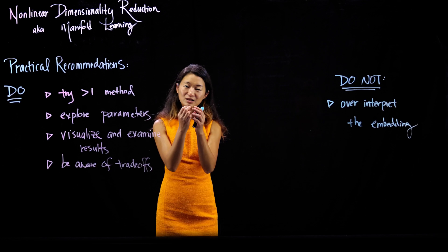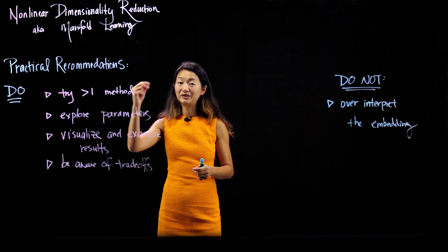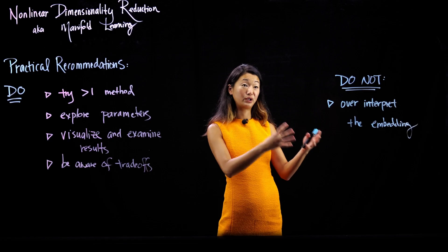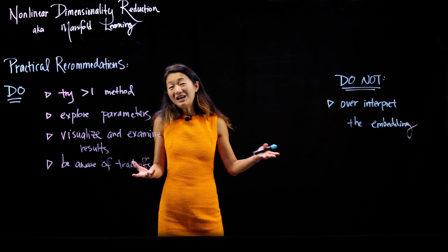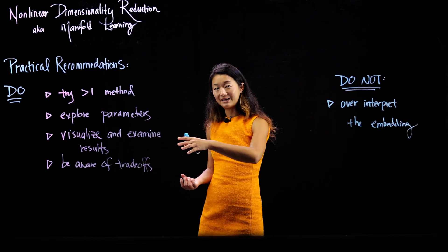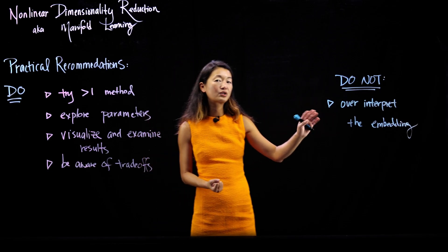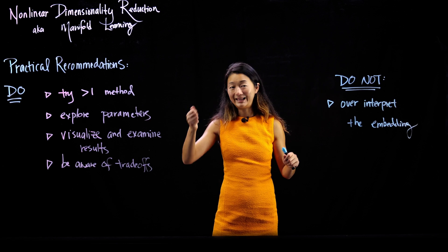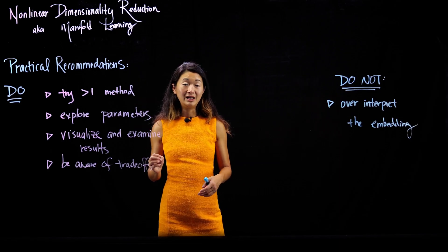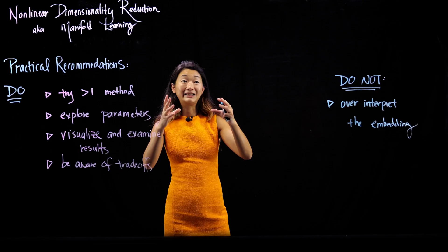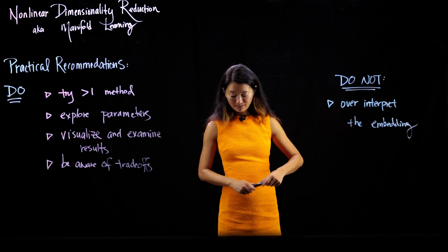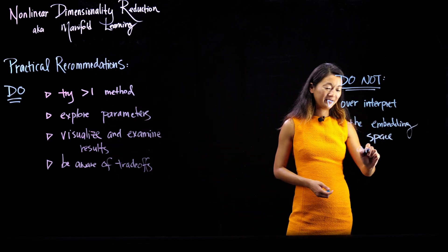A common mistake, especially among people new to manifold learning embeddings, is taking a beautiful embedding and concluding that because one thing is close to another, they must be related — and then designing experiments or writing papers about how these things are definitely related. The problem is: when you try multiple methods, tweak parameters slightly, and visualize the results, those over-interpreted relationships are often the ones that disappear. I want to see interpretations that are robust to the specific parameter decisions I'm making. If making the epsilon neighborhood slightly larger completely changes everything, that makes me skeptical of the results.